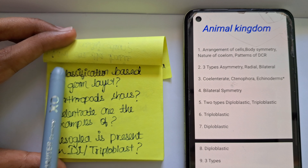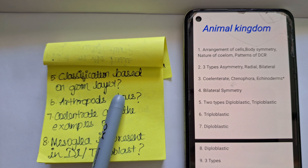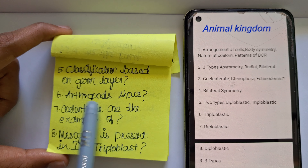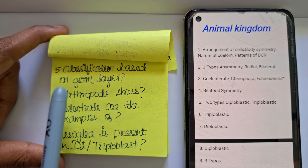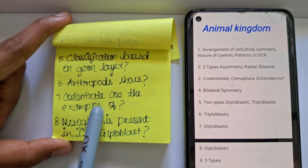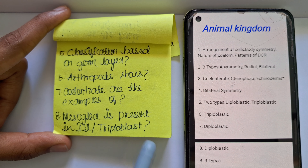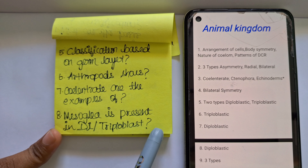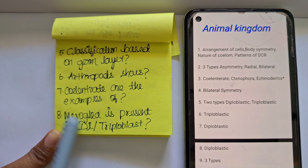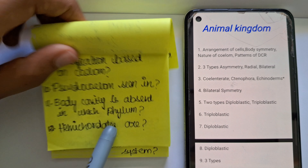Classification based on germ layer — how we are dividing the organisms: we are dividing into two types, one is diploblastic and the other is triploblastic. The next question: arthropods show diploblastic or triploblastic? Arthropods are triploblastic animals. Examples of diploblastic are Coelenterates. Mesoglea is present in diploblastic or triploblastic? It is obviously diploblastic, because in triploblasts we have a term called mesoderm which is a true layer, but mesoglea is not a true layer.